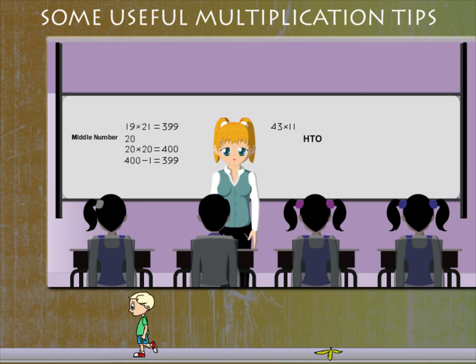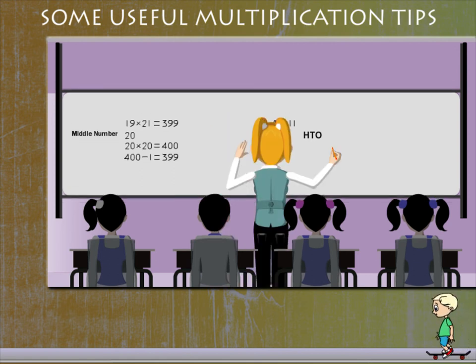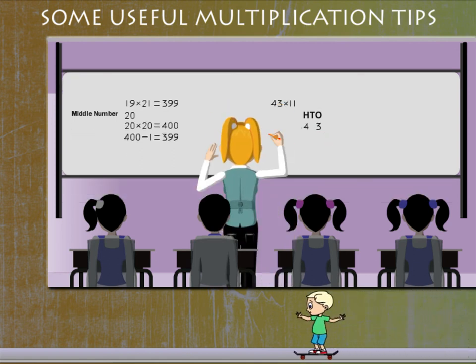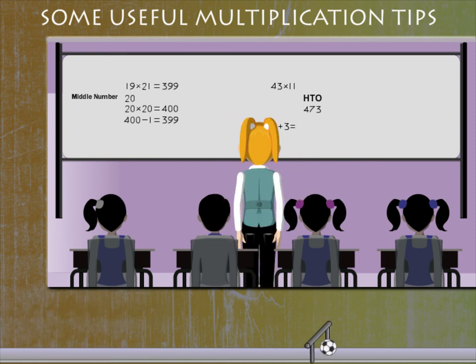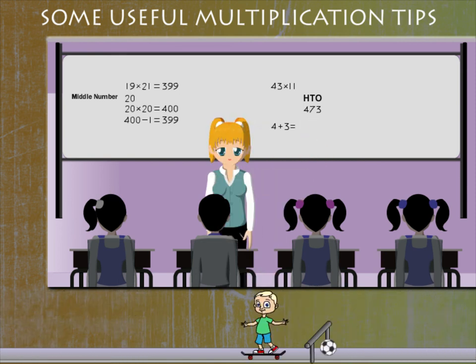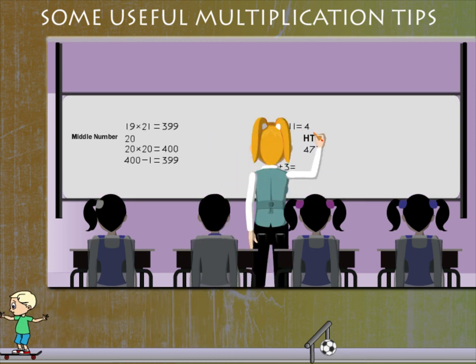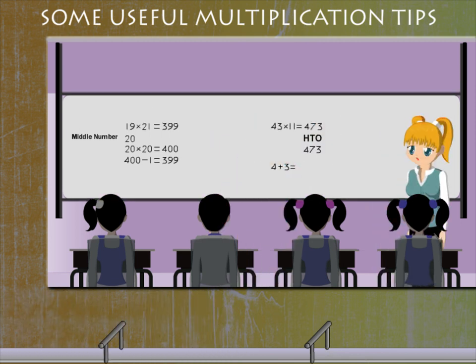are tens in both numbers, the product will have hundreds also. Put the 3 below the ones and the 4 below the hundreds. Now add the 4 and 3, put this 7 in the tens place, and the answer is 473. This is a tip that can be used when multiplying by 11.